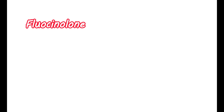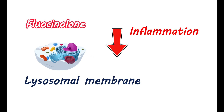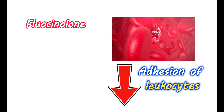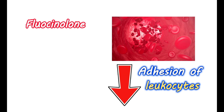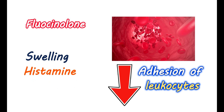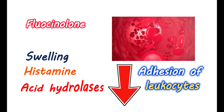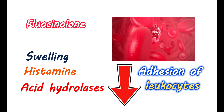How does it work? Fluocinolone is a corticosteroid that helps reduce inflammation through multiple mechanisms. It can stabilize lysosomal membranes and reduce the release of leukocytes, which reduces inflammation development. It also inhibits the accumulation of inflammatory mediators and reduces adhesion of leukocytes to blood capillaries, further inhibiting the inflammatory response. It reduces capillary wall permeability, decreasing the chance of swelling and edema. Fluocinolone also reduces histamine activity and prevents the release of acid hydrolases that produce skin damage. By all these actions, it produces anti-inflammatory activity.